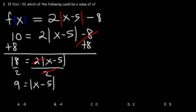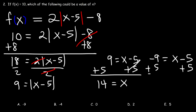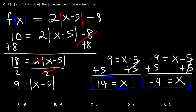To get rid of the absolute value symbol, we need to write two equations: 9 = x − 5, and −9 = x − 5. So we're going to get two possible answers. Adding 5 to both sides gives x = 14, and for the other equation, −9 + 5 = −4, so x = −4. However, −4 is the only one listed, so B is the right answer.